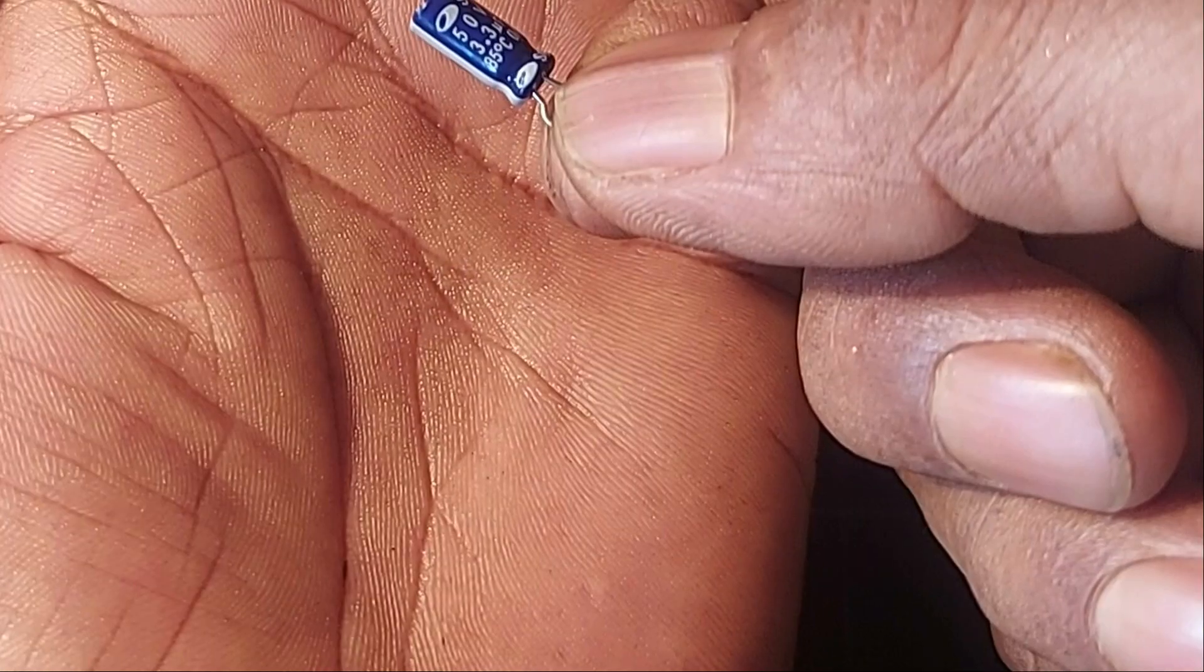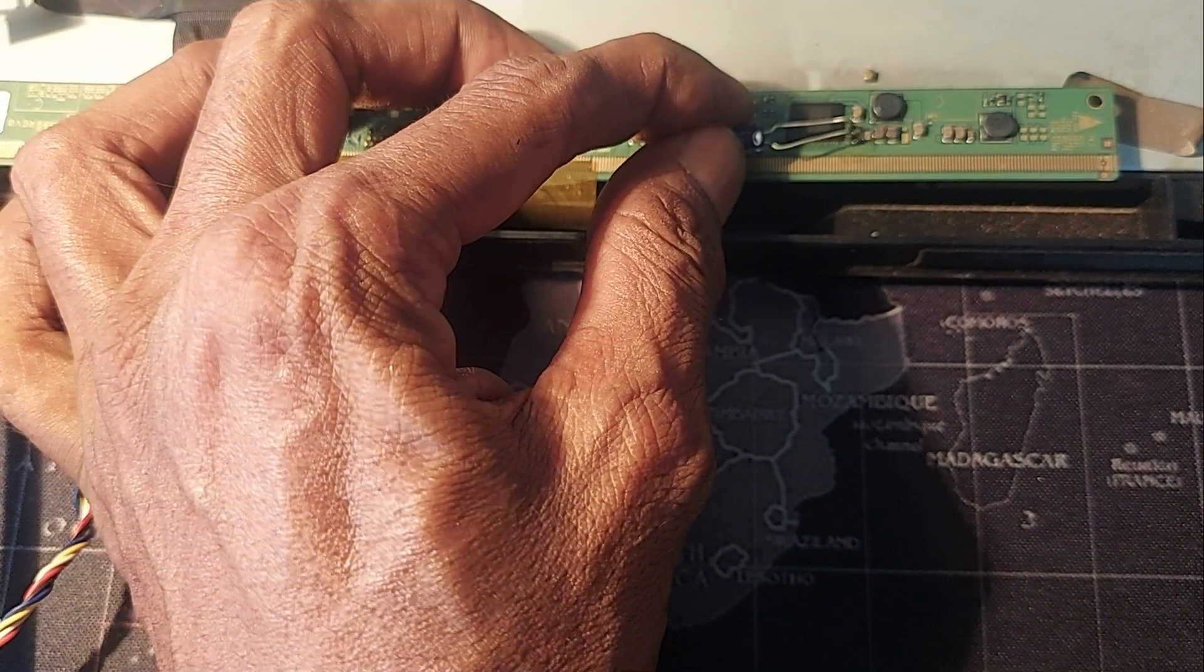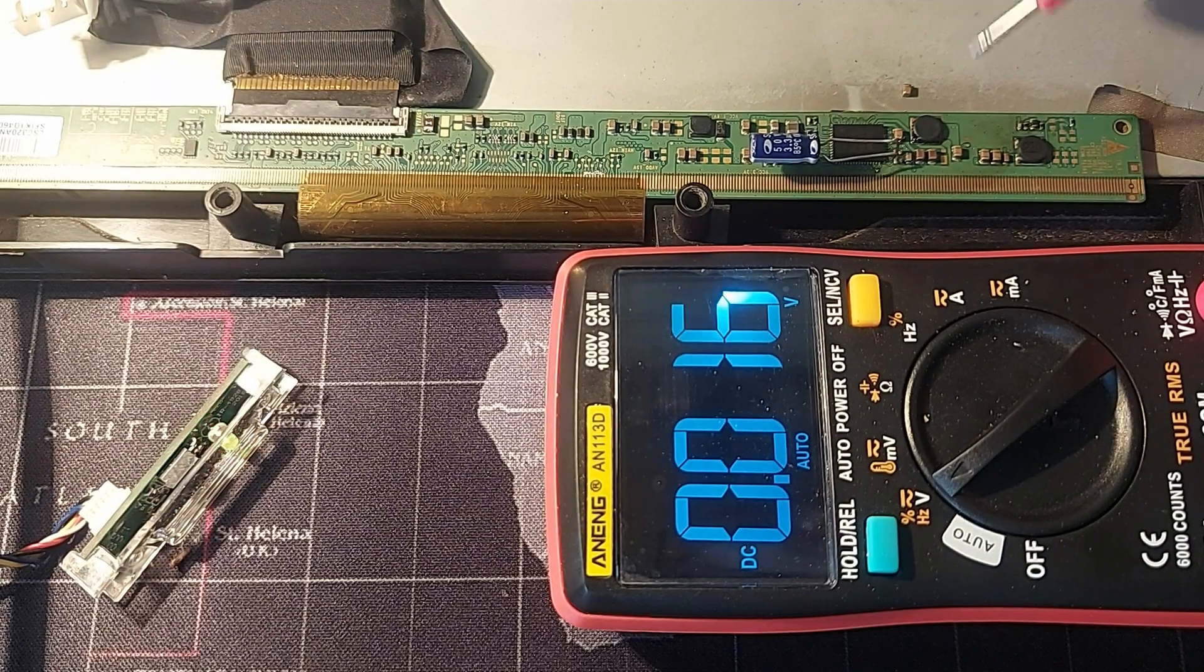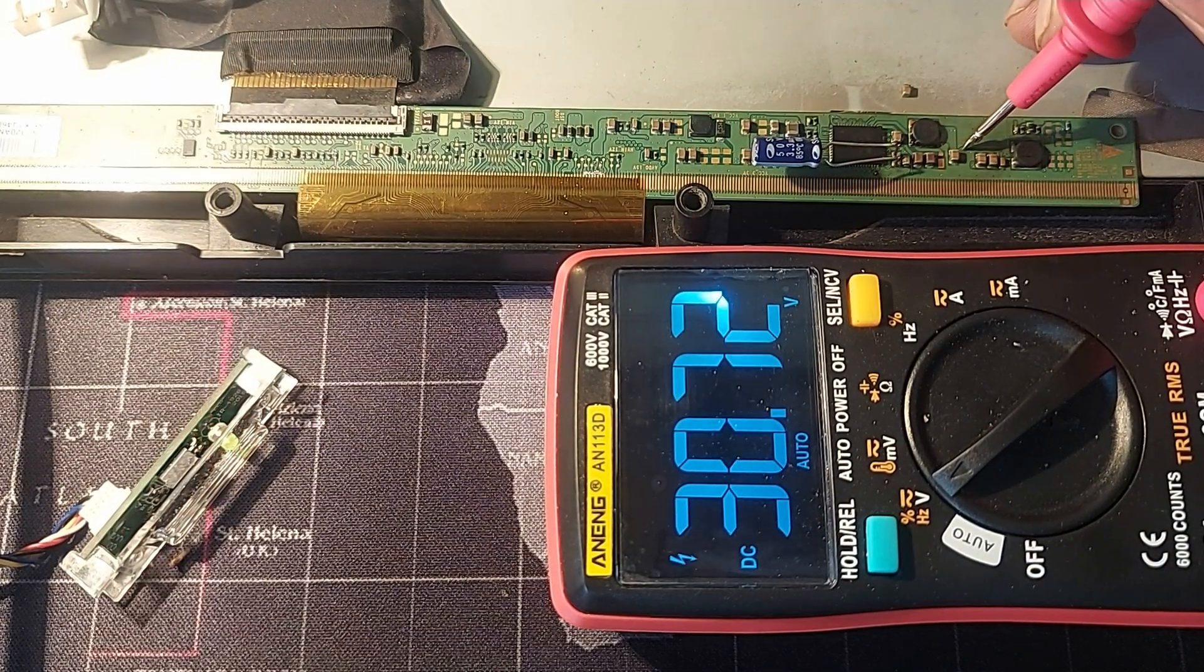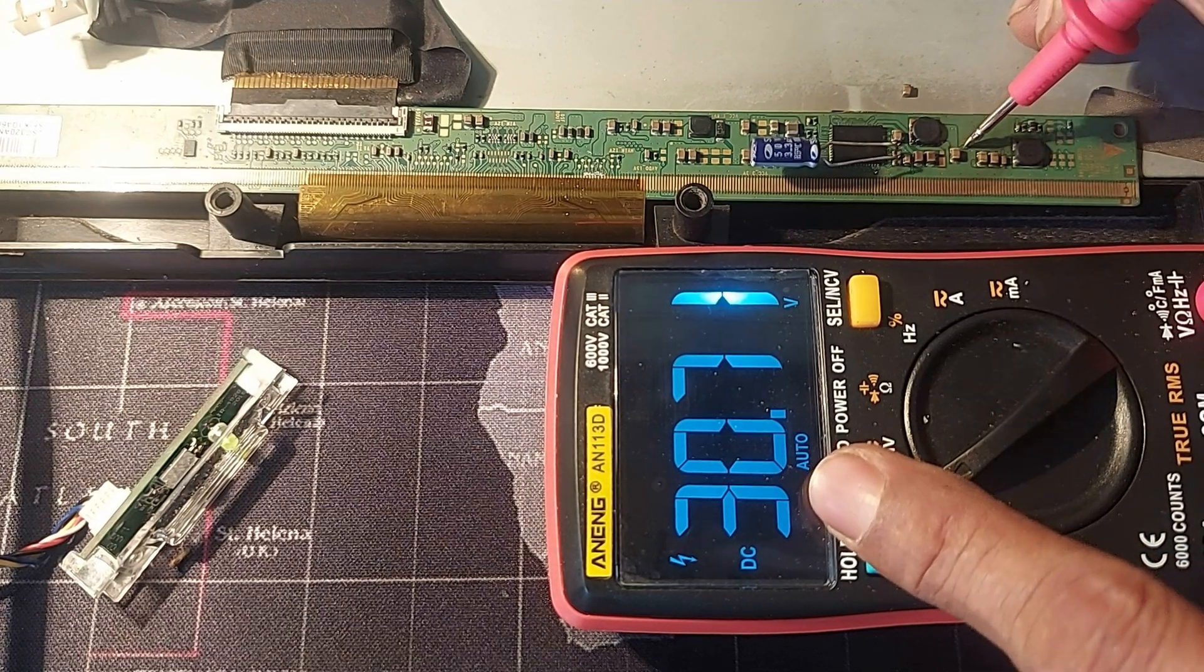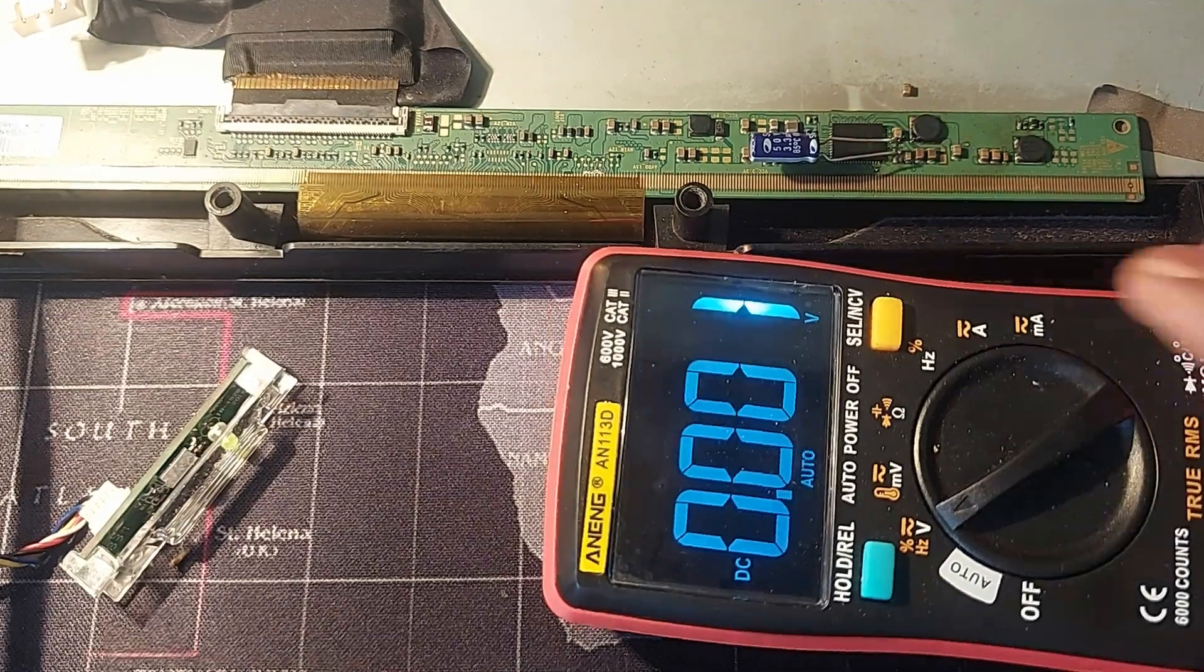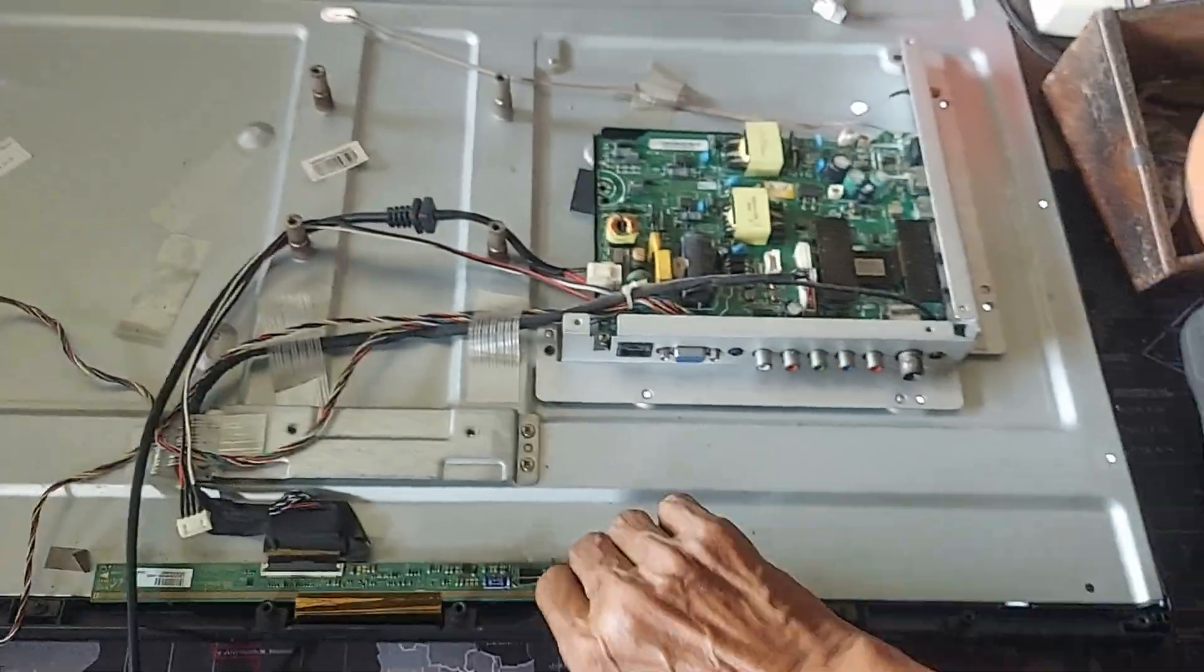Then let's see what happens. Okay, now let's measure again. VGAS is 30.7 volts, VGL 9.97 volts. Very nice. Now let's see what happens on the screen.